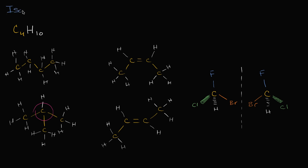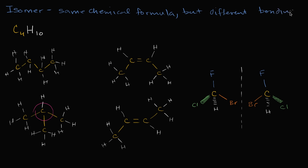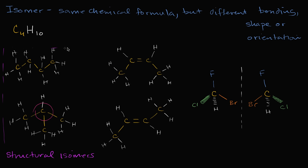Over here, we have a carbon that is bonded to three other carbons and a hydrogen. Over here, I can't find any carbon that's bonded to three other carbons — I can find ones bonded to two other carbons, but not three. So how we've put the atoms together is actually different; they're bonded to different things. When you have the same constituent atoms, the same chemical formula, but different molecules because of how their bonds are made, we call those isomers. An isomer has the same chemical formula but different bonding, shape, or orientation. This type, with just different bonding, is called a structural isomer.